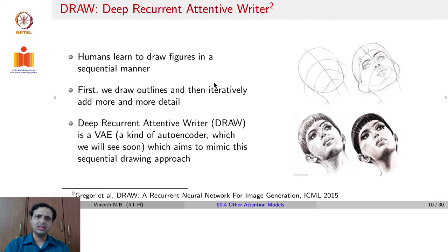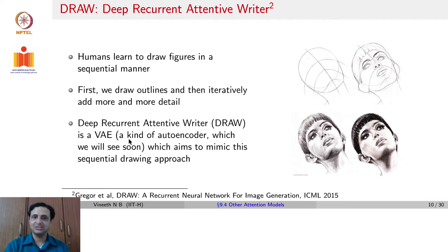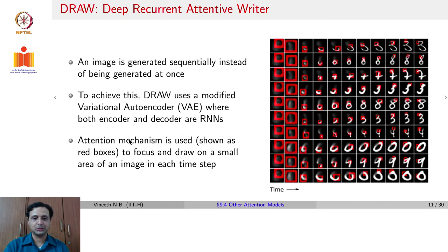This work was published in 2015, and is based on the intuition that when humans generate images such as drawings and sketches, they learn to draw in a sequential manner — one first draws the outlines, then keeps adding details iteratively. DRAW uses a variational autoencoder (VAE), a variant of an autoencoder used for generative models, to mimic this approach. Although we have not covered generative models yet, DRAW uses a unique attention mechanism which is of interest in this lecture.